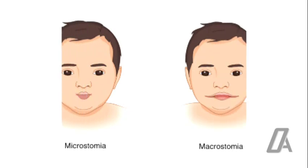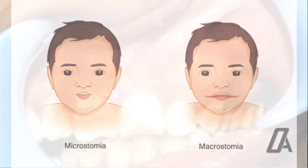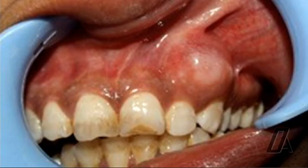Overfusion of the maxillary and mandibular processes leads to a small mouth called microstomia, and the opposite of this condition is macrostomia. The globulomaxillary cyst is the medial cyst in the line of fusion of the globular and maxillary processes.